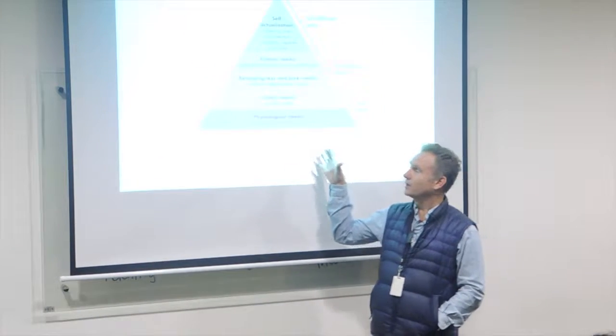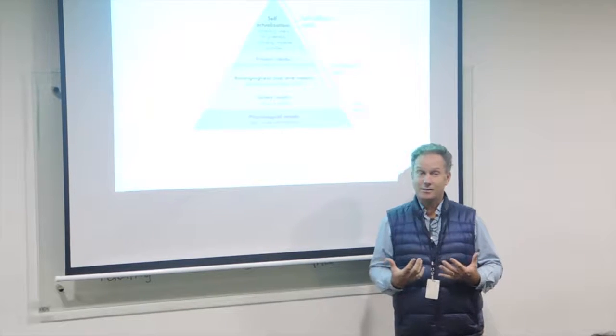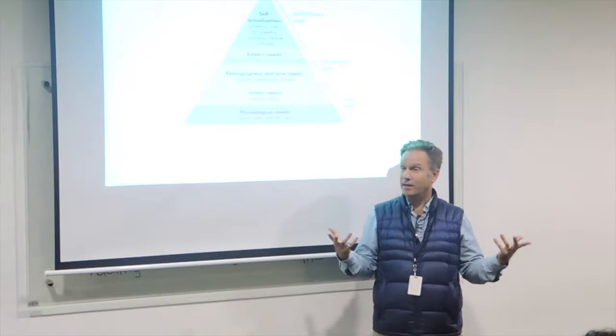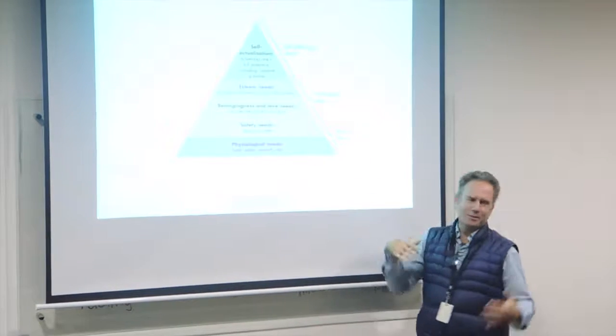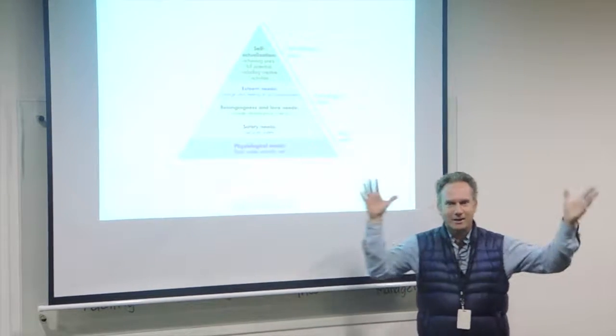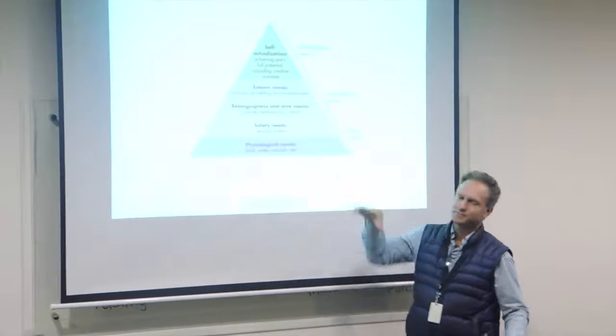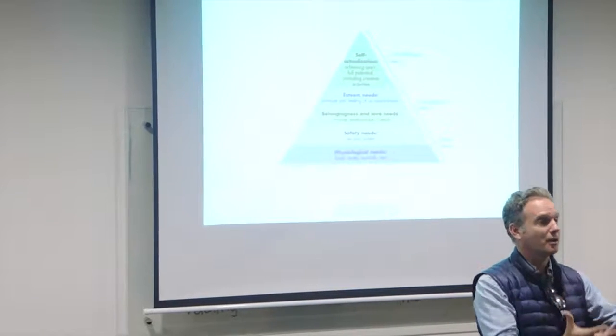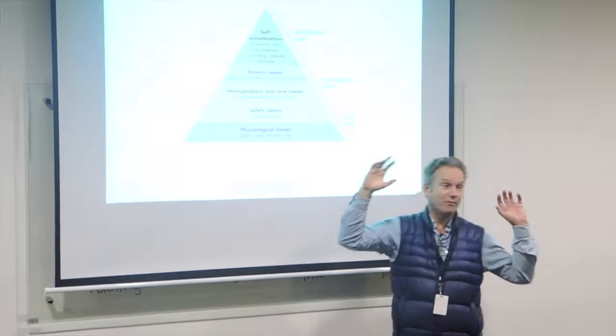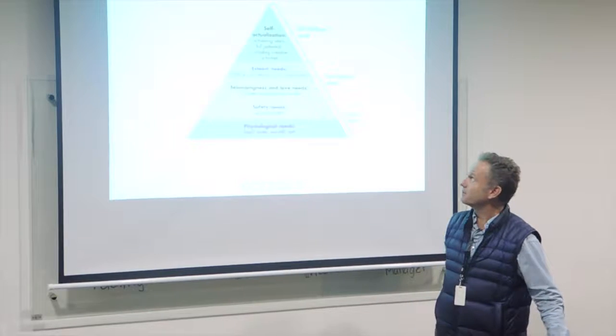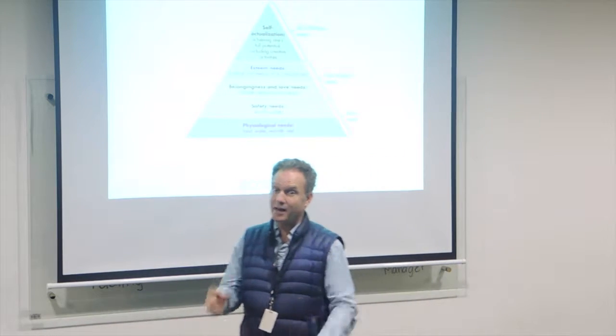This is the Maslow Triangle. You have your basic needs of food and water. You can't live without those. But once you have that, then your needs are more like being part of community, friends, family relations. But at the end of the day, you want to live a full life and a happy life. You want to try to get to the peak of this Maslow Triangle, which is fulfillment. And you can only get fulfillment by helping others.